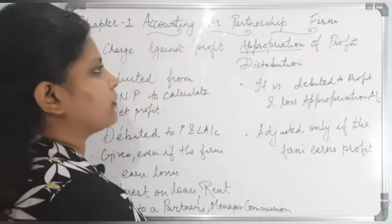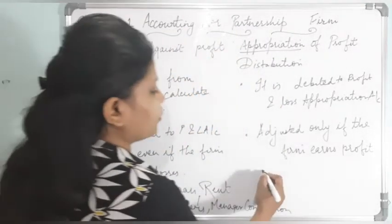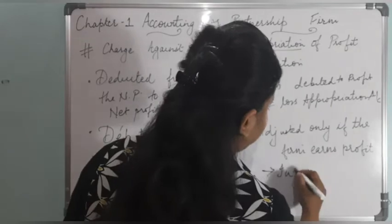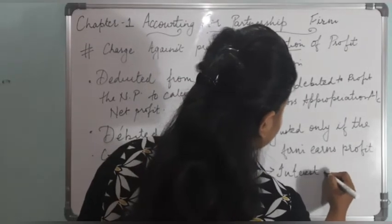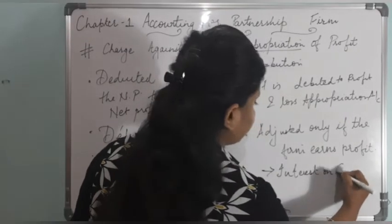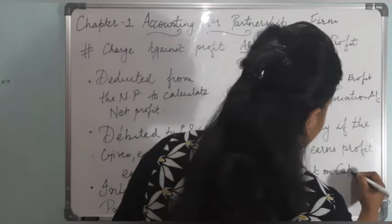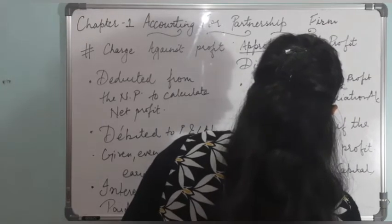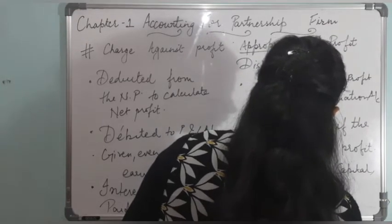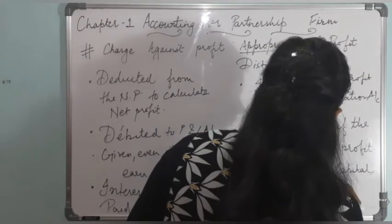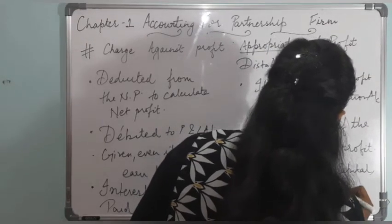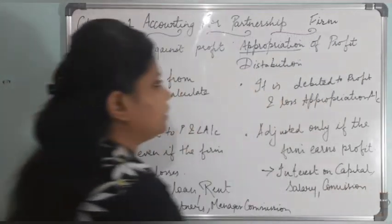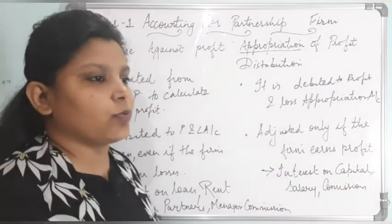The items of appropriation of profit are: interest on capital, salary, and commission. These will be given only if the firm earns a profit.